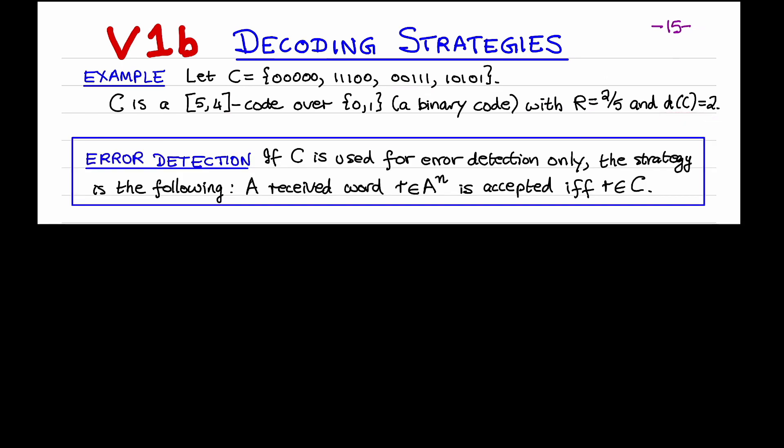Now, if a code such as C is used for error detection only, then the decoding strategy is a natural one. Namely, the received word R is accepted if and only if R is a codeword. This makes sense because only codewords are transmitted, and so if a received word is not a codeword, then it should be rejected.